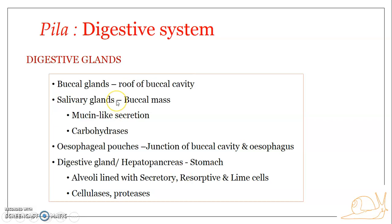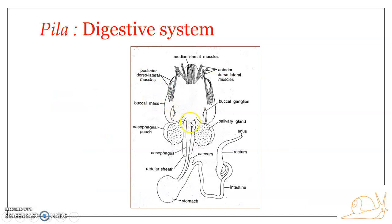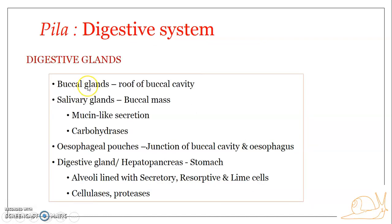The buccal glands are glandular areas found on the roof of the buccal cavity. There is a pair of buccal glands situated anterior to the junction between the buccal cavity and the esophagus, on the roof of the buccal cavity. The secretions of the buccal glands are believed to be involved in carbohydrate digestion, and the buccal glands are also believed to secrete mucus, which helps in movement of food through the alimentary canal.